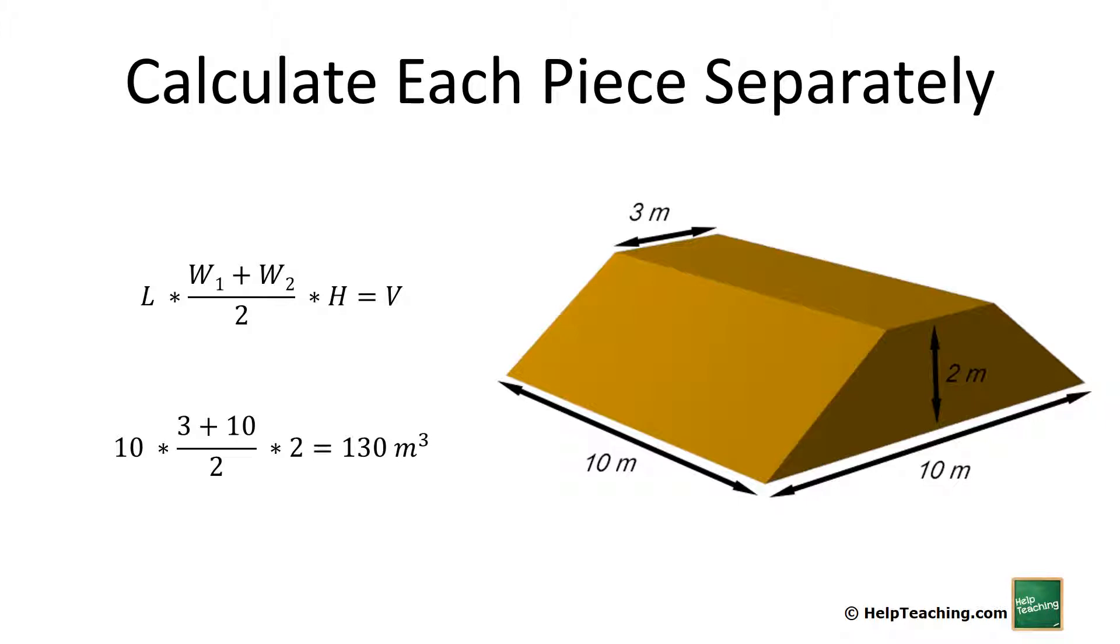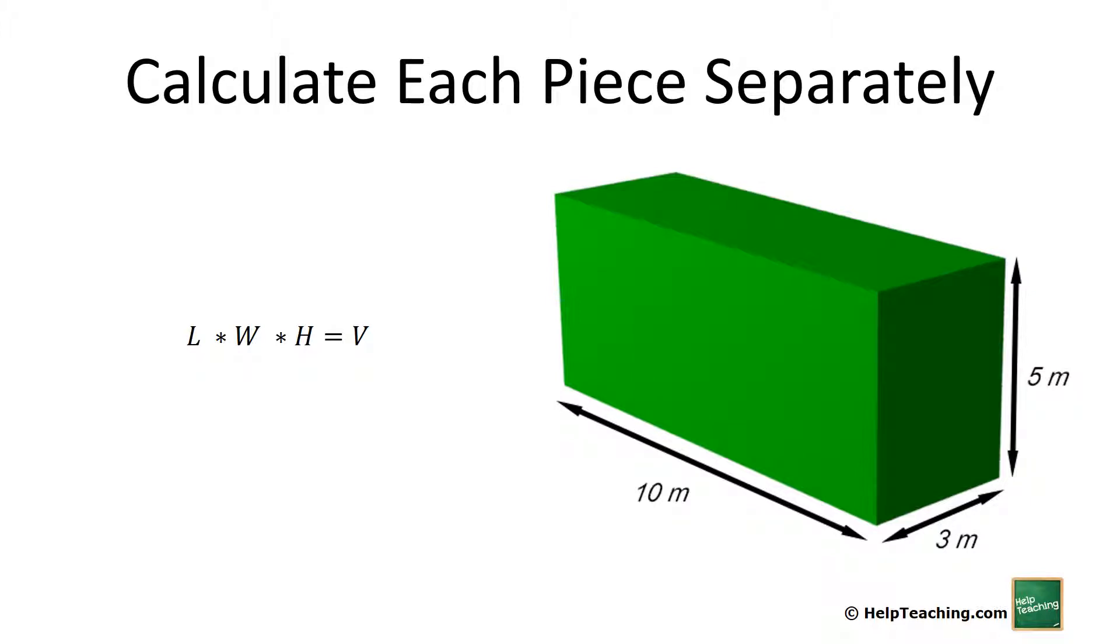Next we have the steeple part. Again very basic: length times width times height. The dimensions we already figured out on the previous screen, so 10 times 3 times 5 gives 150 cubic meters.